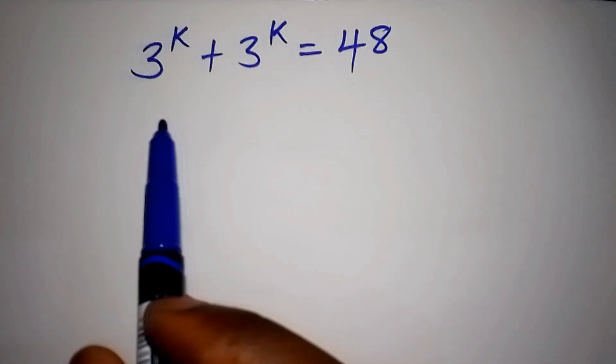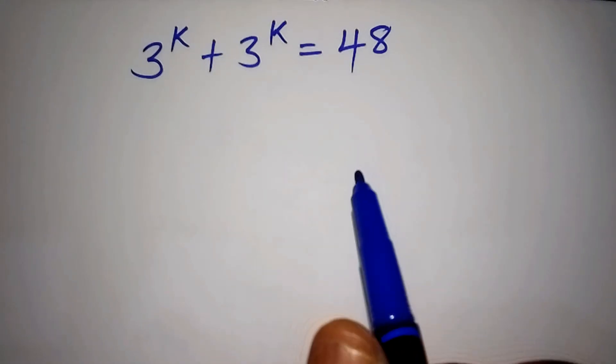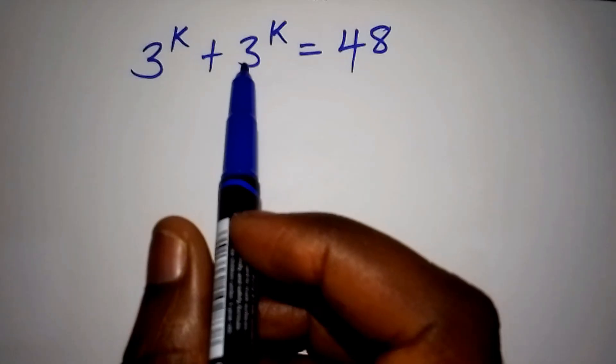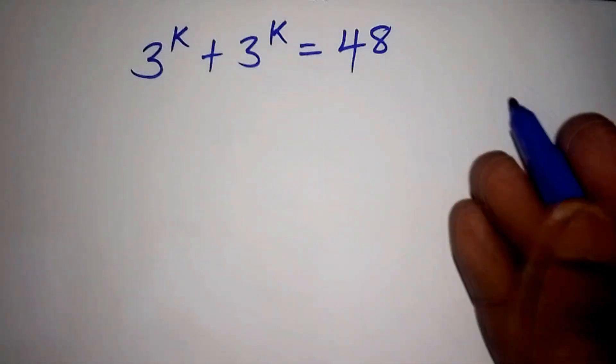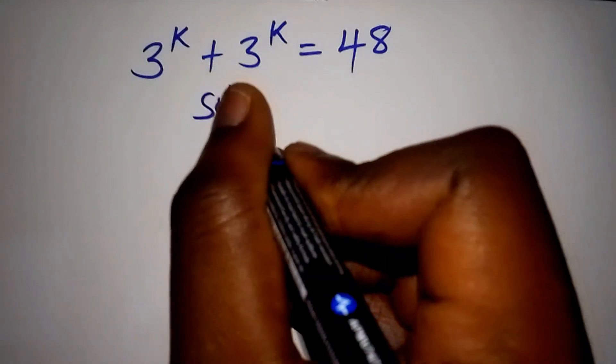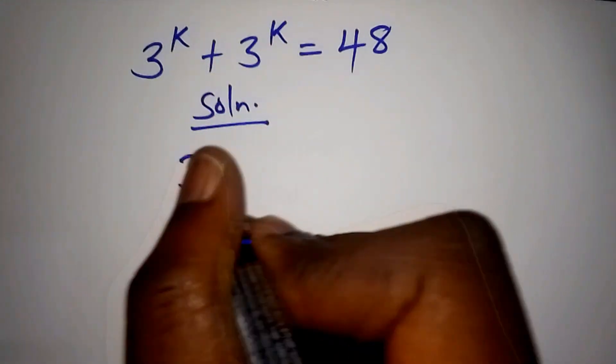Hello, you are welcome. We are going to solve this math problem. Given that 3 to the power of k plus 3 to the power of k is equal to 48, let us find the value of k.